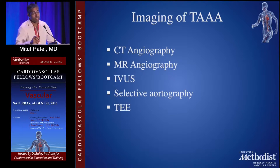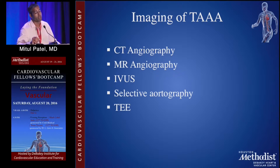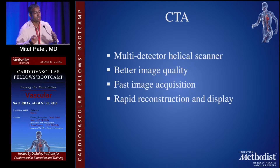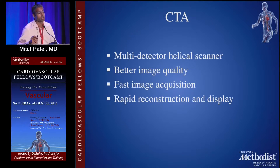For imaging, most commonly patients get CT angiograms. MRA is also available. While in the operating room for intervention, IVUS, aortography, or transesophageal echocardiography can be performed, though there are limitations to those modalities. CTA using a multi-detector helical scanner provides better image quality, fast image acquisition, and rapid reconstruction display.